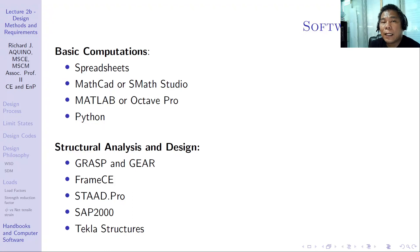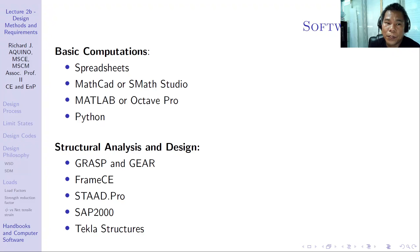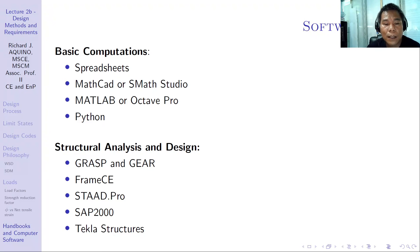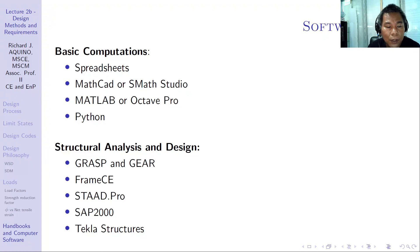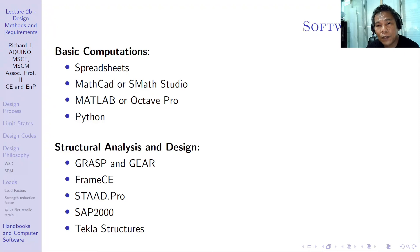It is encouraged to learn tools such as spreadsheets, Scilab/Scimat Studio (which is free), MATLAB, or Python for basic computations. For structural analysis and design, software such as GRASP, ETABS, SAP2000, STAAD Pro, Sub2000, Tekla Structures, and others can be used. That's all for today on design methods and requirements; next time we will discuss analysis and design. Thank you for listening.